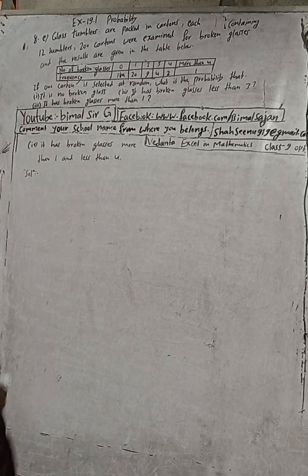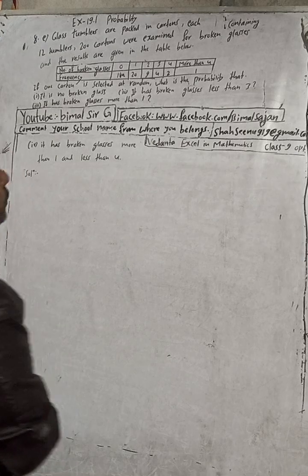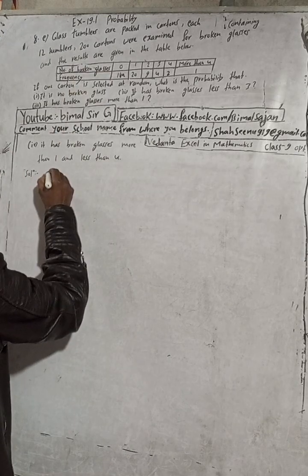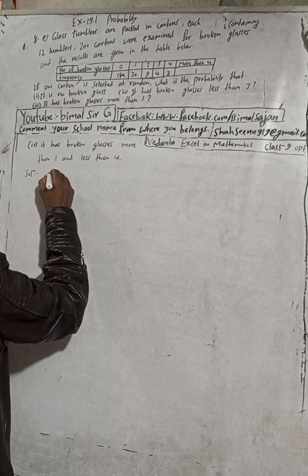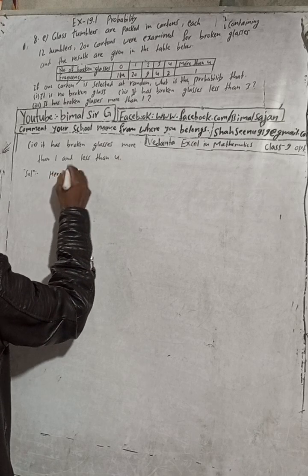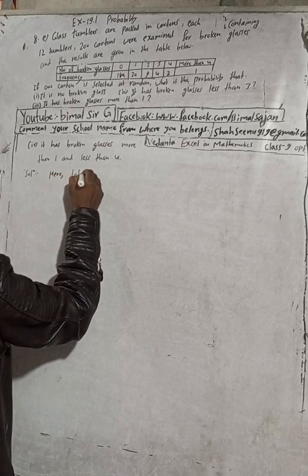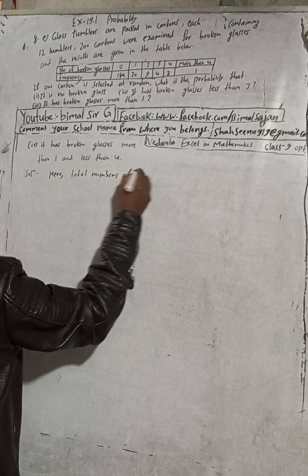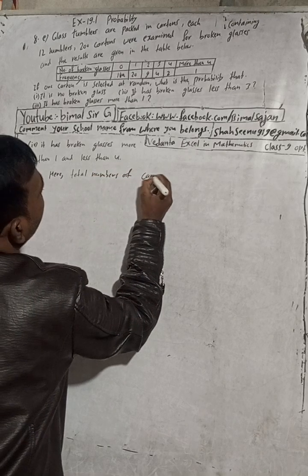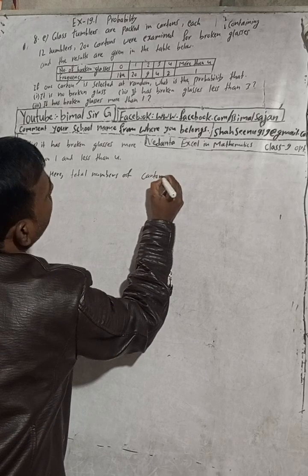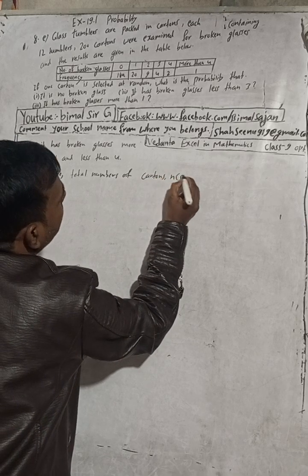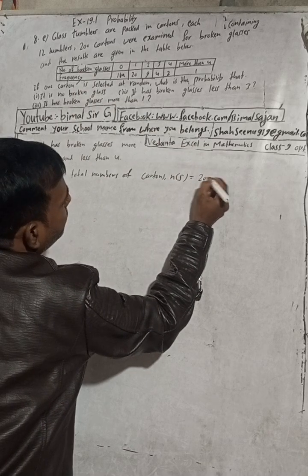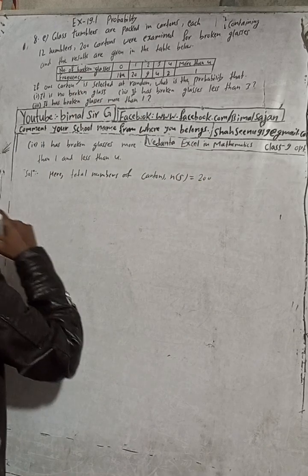Let's begin the solution. Glass tumblers are packed in cartons, so the total number of cartons is 200. This is our sample space — sample space S = 200 cartons.